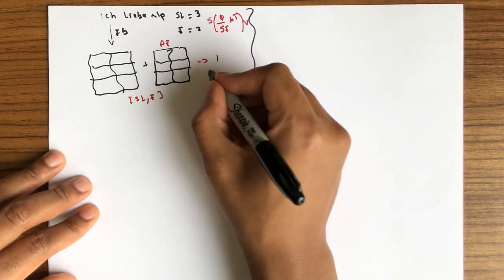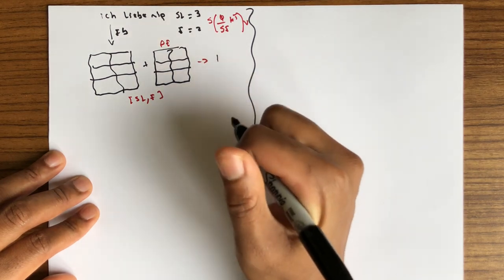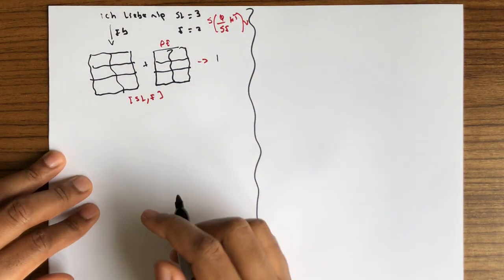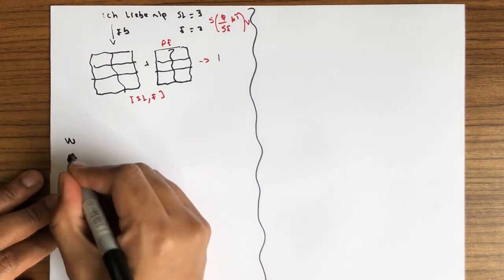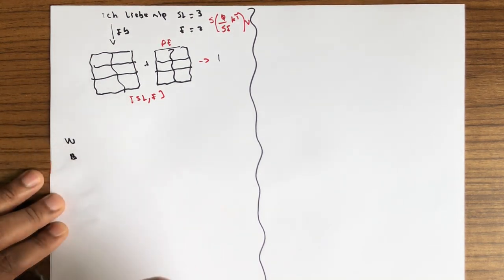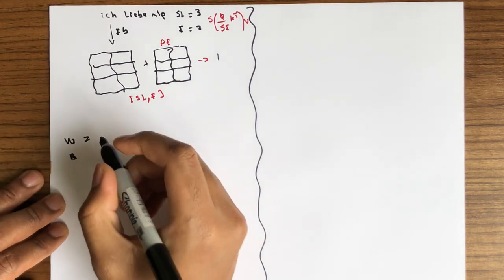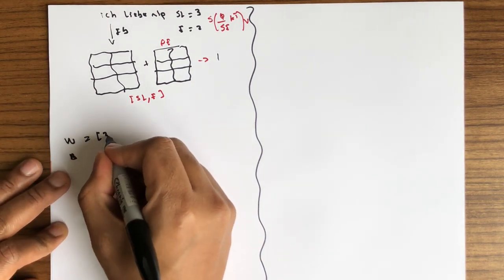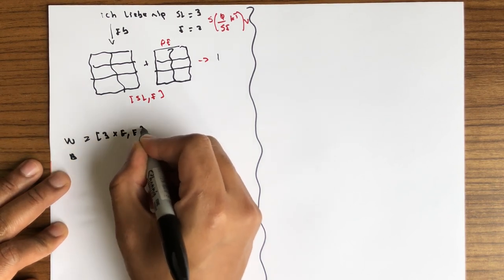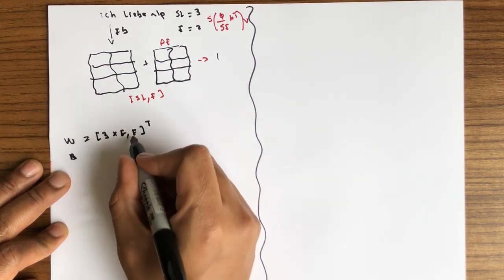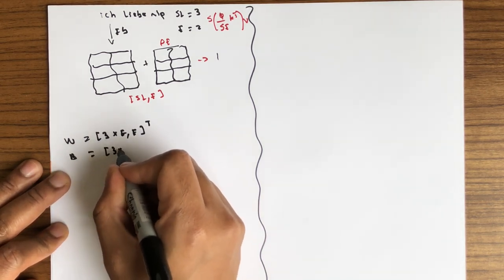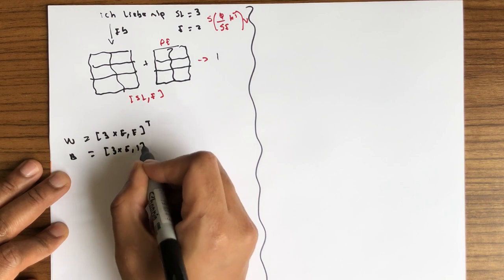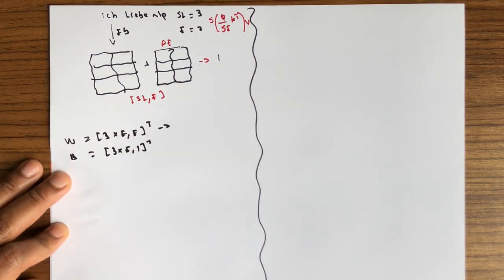This result I also has a dimension of sl by e. This I is actually the query, key, and value, and they will be transformed using W and b. W and b will be created by PyTorch for us. W has a dimension of 3e by e, and b has a dimension of 3e by 1. We take the transpose to get dimension 2 by 6.